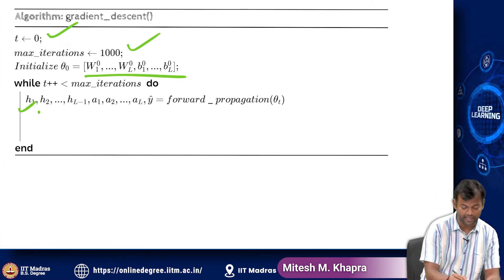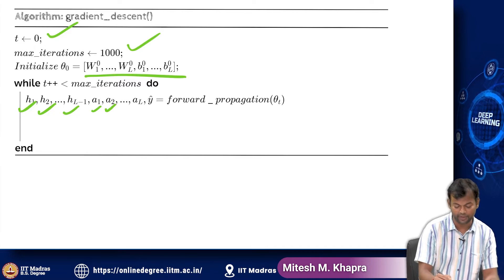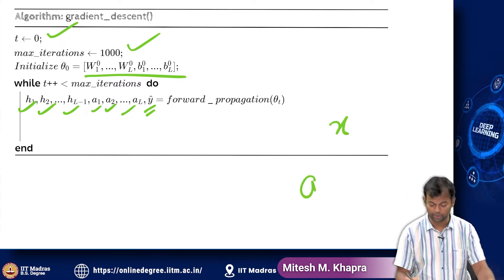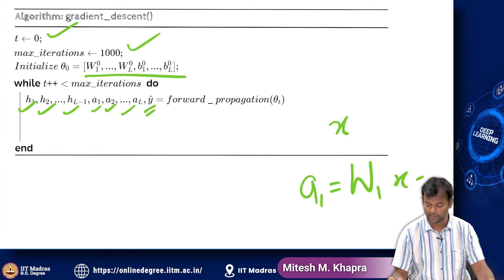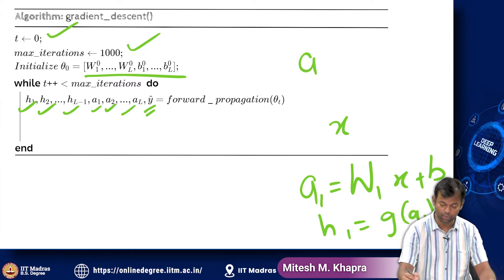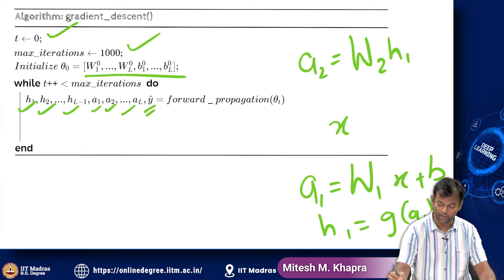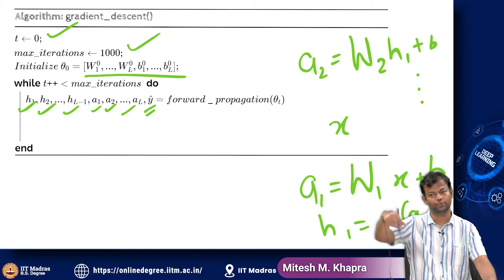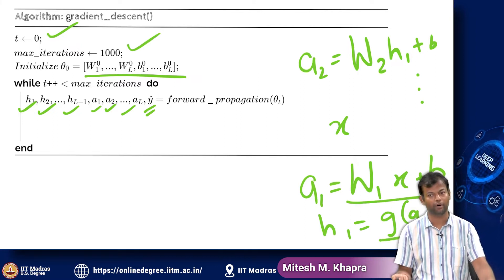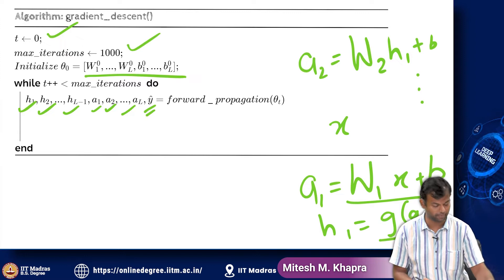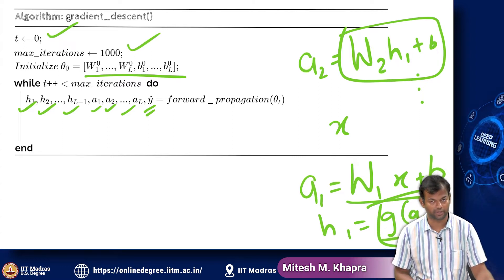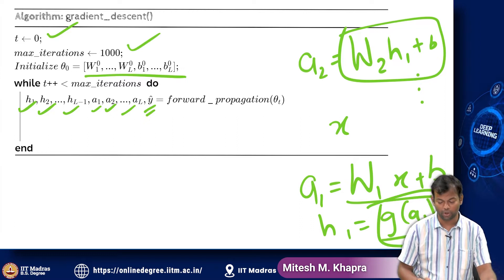At every stage you compute all the pre-activations, activations, and the output using the forward pass. You start with x, compute a1 as w1*x plus b, then h1 as g of a1, then a2 as w2*h1 plus b, and so on. This is all simple matrix-vector multiplication — there are no gradients involved. You are just taking the input and passing it through a series of transformations. You know how to compute the element-wise logistic, for example, if g equals the logistic function.